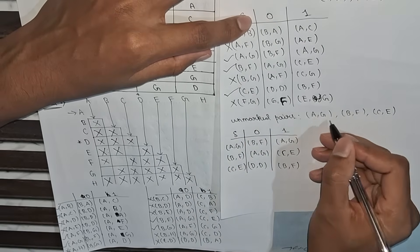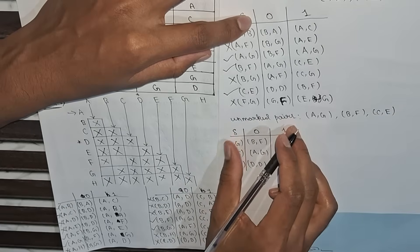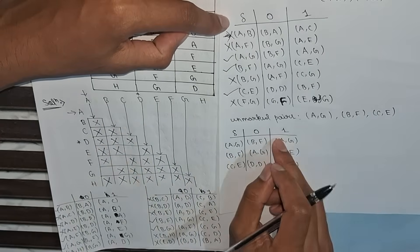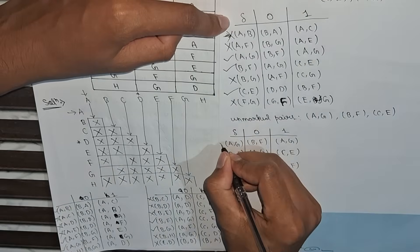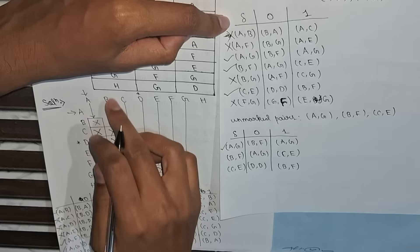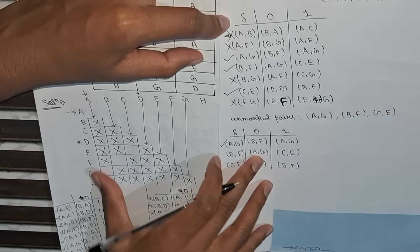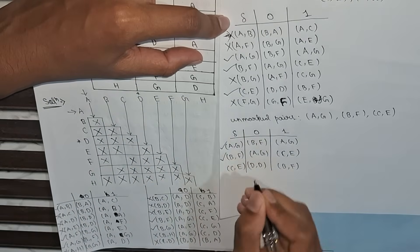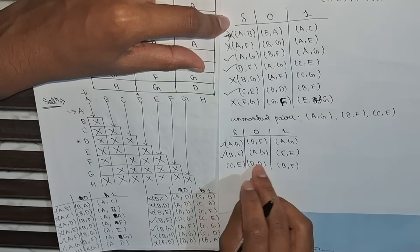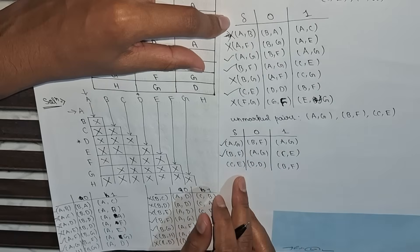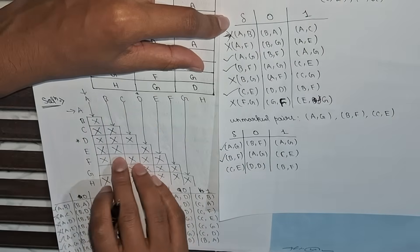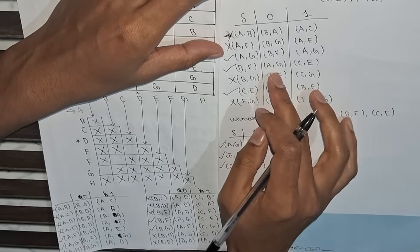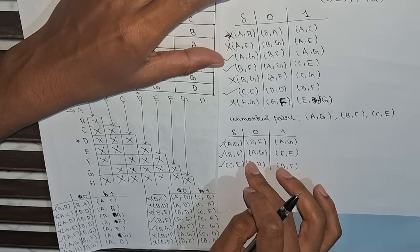The remaining unmarked pairs are a,g — b,f — and c,e. We repeat the process: for a,g, checking b,f — still unmarked; for b,f — a,g itself is unmarked; for c,e — d,d both final and b,f is unmarked. We get the same unmarked pairs, so step 3 is complete — no more markings can be done.